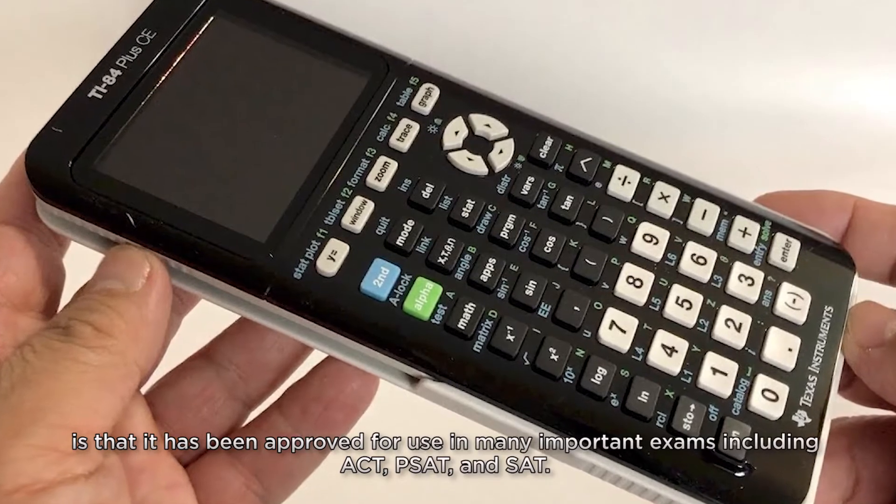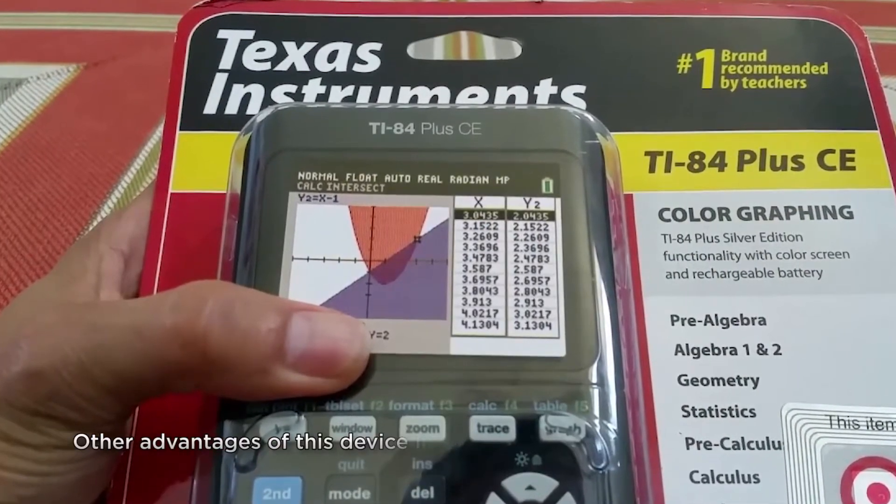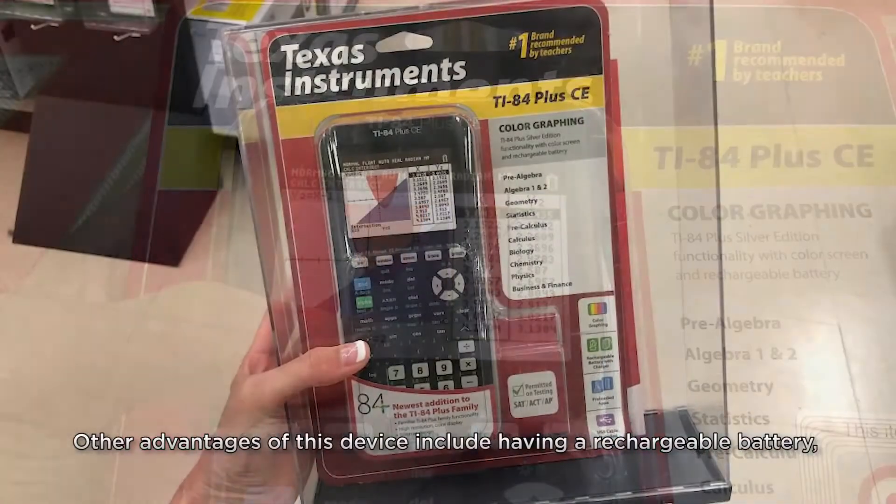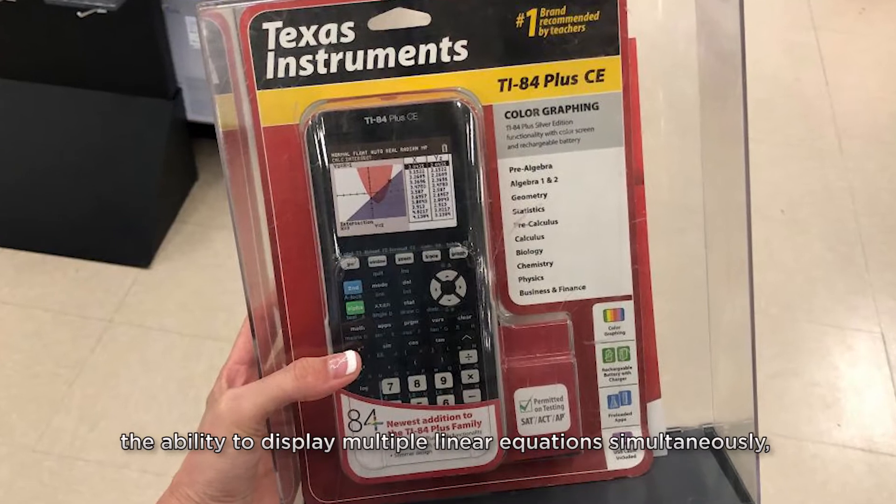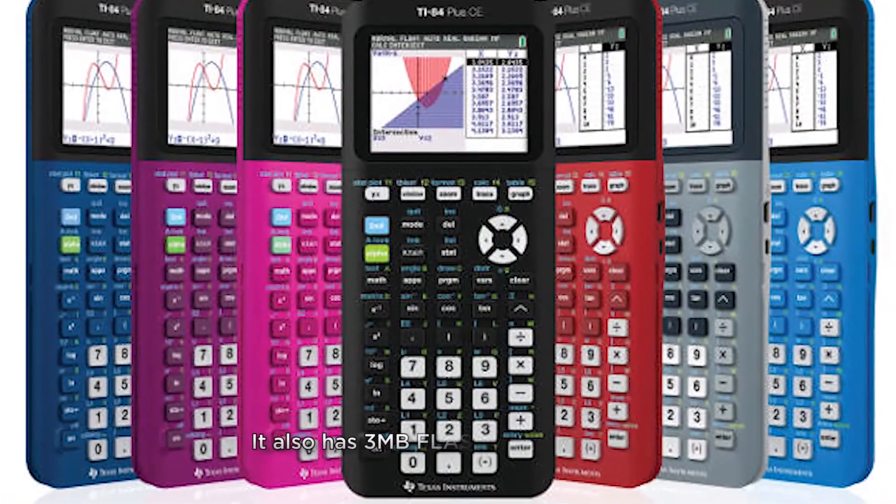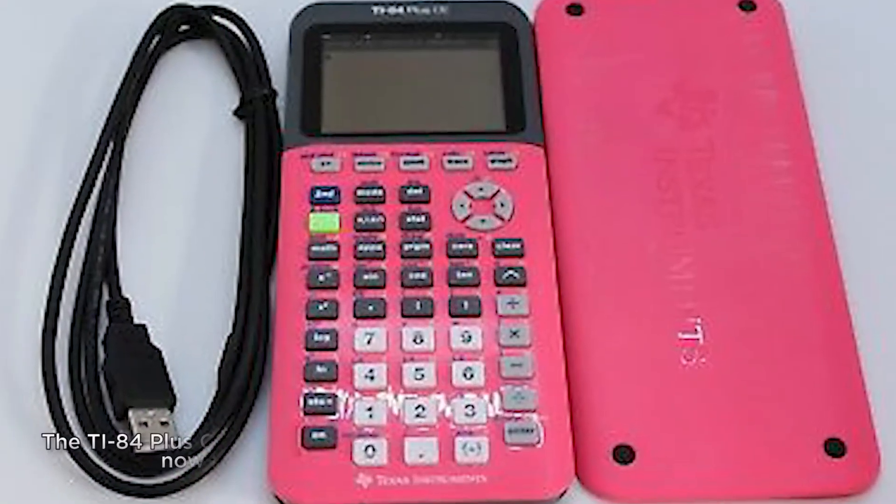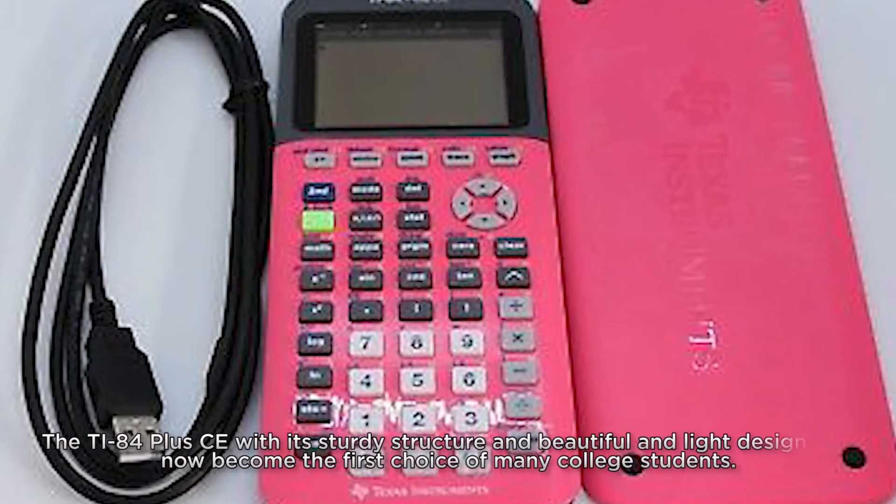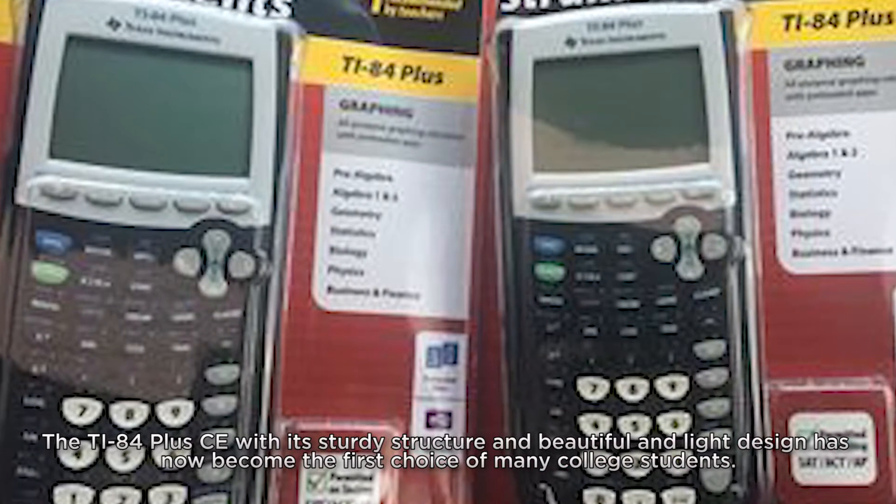including ACT, PSAT, and SAT. Other advantages of this device include having a rechargeable battery, the ability to display multiple linear equations simultaneously, and having a detailed menu with easy navigation. It also has 3MB flash ROM memory, so you can archive data and applications. The T84 Plus C with its sturdy structure and beautiful and light design has now become the first choice of many college students.